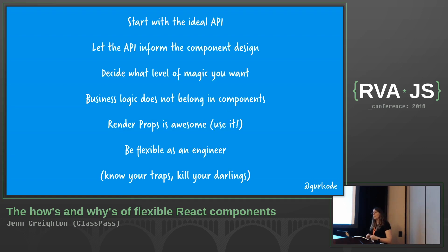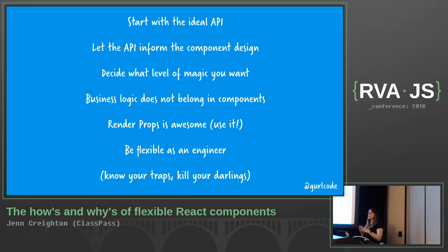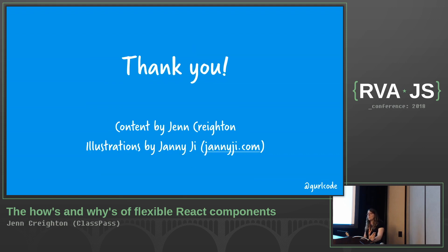Here's a summary of everything we learned — surprisingly a lot. Start with your ideal API and build toward a more realistic one as you go. Let that API inform your component design. Decide what level of magic you want up front. Remove business logic from your components — it makes things way easier. Render props is really awesome and you should use it, but please remember to be flexible as an engineer as well. Know your traps and kill your darlings. Thank you.